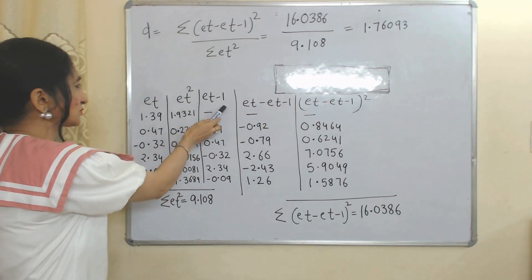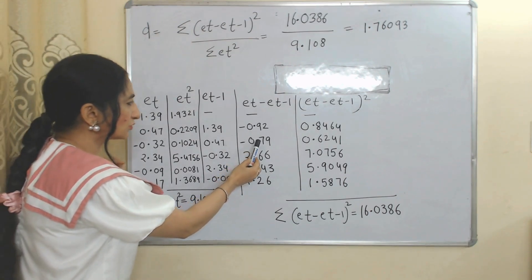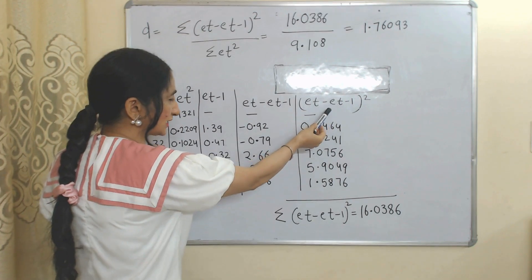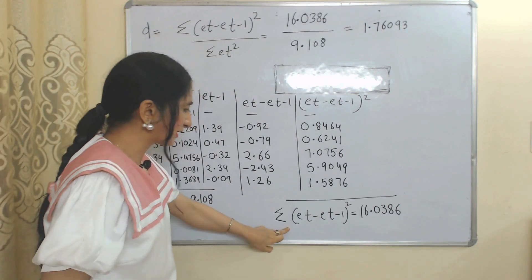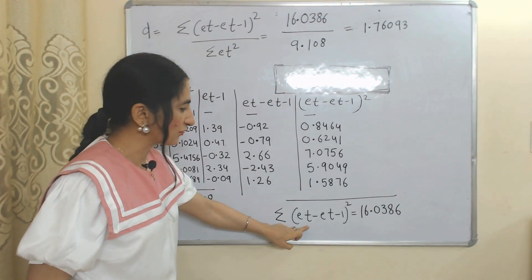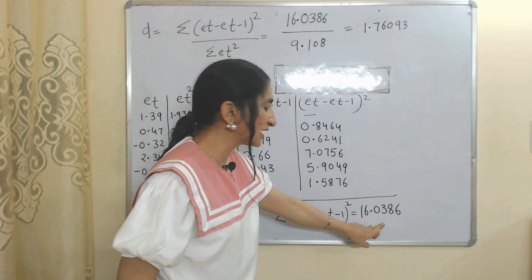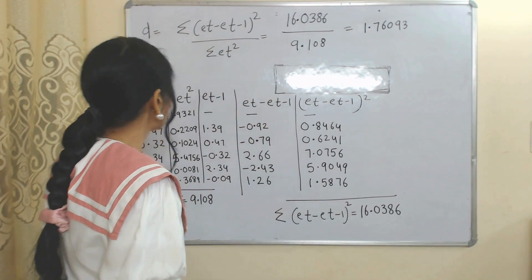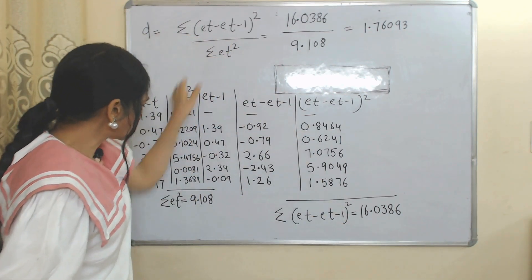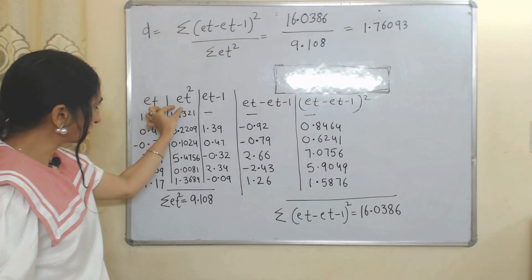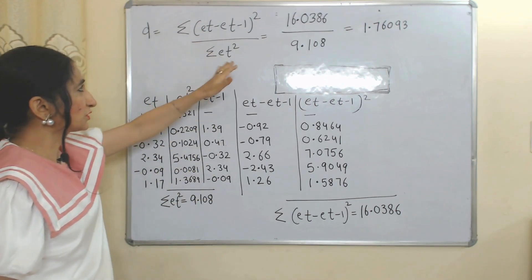Now we will subtract e_{t-1} from e_t to calculate (e_t minus e_{t-1}). When we subtract, we get all these values. Then we square all those values to get the whole square of (e_t minus e_{t-1}). We add all these squared values to get the summation of (e_t minus e_{t-1}) squared. We also add all values of e_t squared to get the summation of e_t squared.